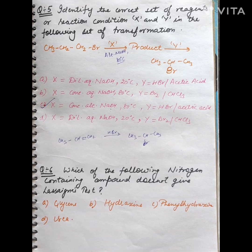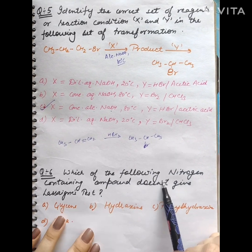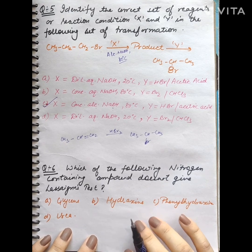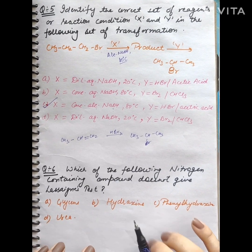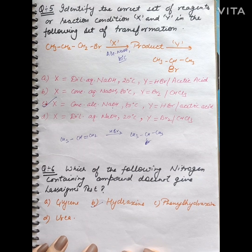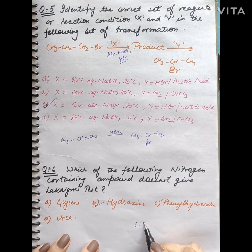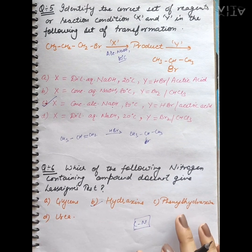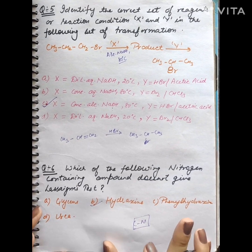Next, question number 6. Which of the following nitrogen-containing compound does not give Lassaigne's test? Hydrazine doesn't give Lassaigne's test. Why? Because there is no carbon with nitrogen.